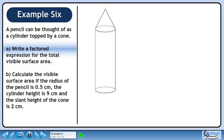Let's look at a wireframe diagram of the pencil. The radius of the cylinder is r. The height of the cylinder is h. The slant height of the cone is s.